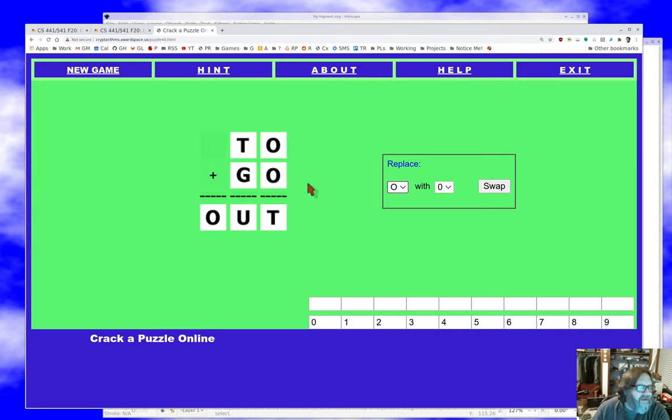And in fact, there are a few more rules. No two letters can have the same value. So once I've assigned zero to O, I can't assign zero to T, G, or U. The other rule is that numbers don't have leading zeros, so none of T, G, or O can actually be zero.